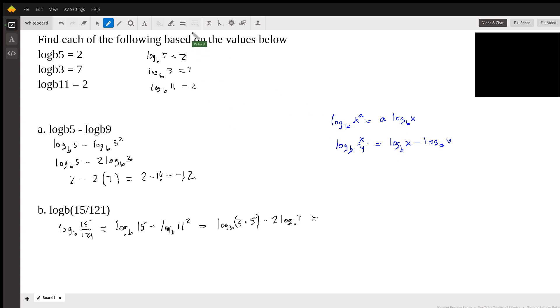And finally, we need one more property, which is the multiplication property, which is the log base B of xy. It's just the log base B of x plus log base B of y. So now I'm going to use that. So this is the log base B of 3 plus the log base B of 5 minus 2 log base B of 11.